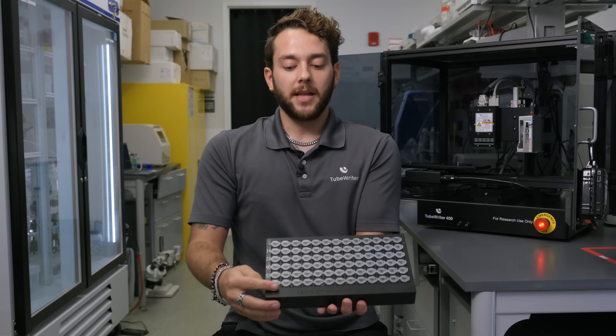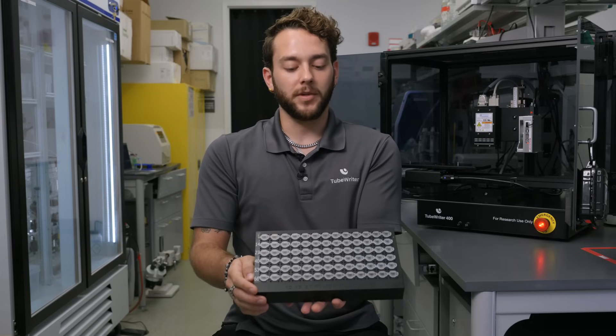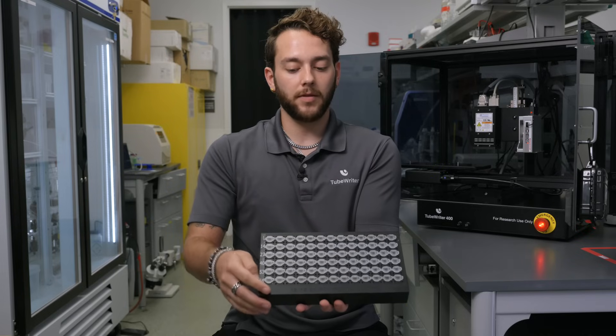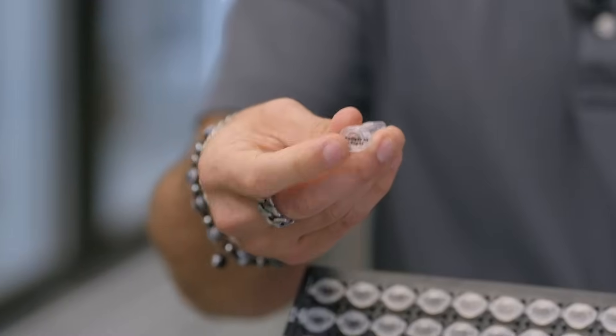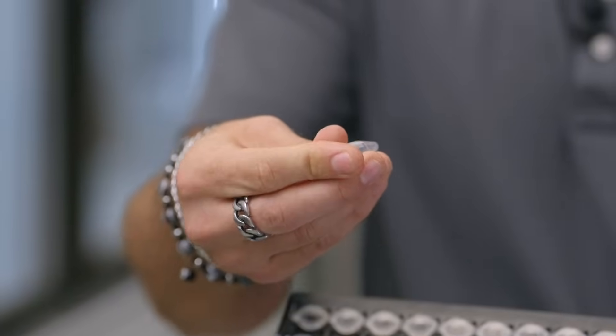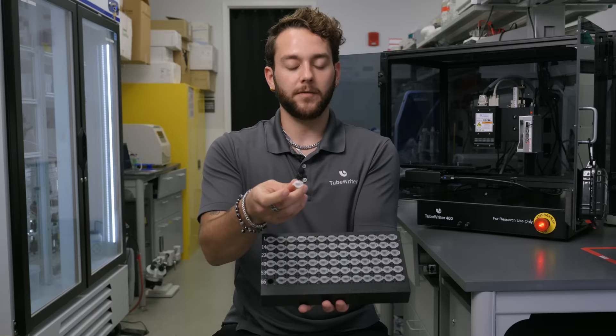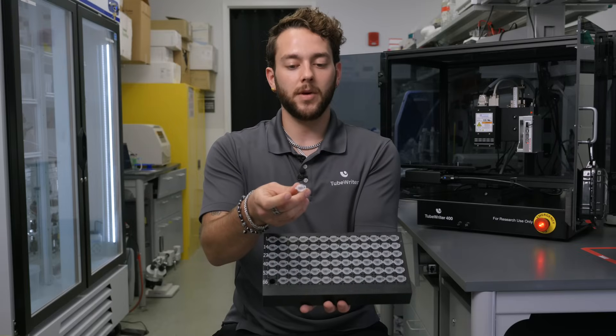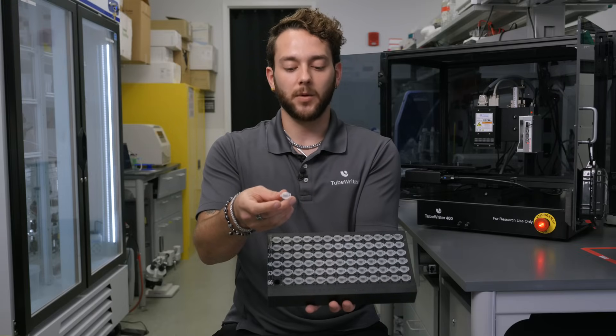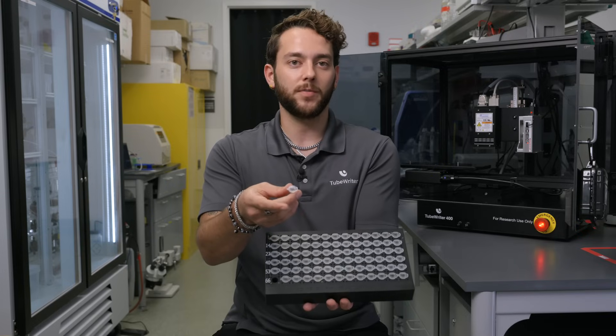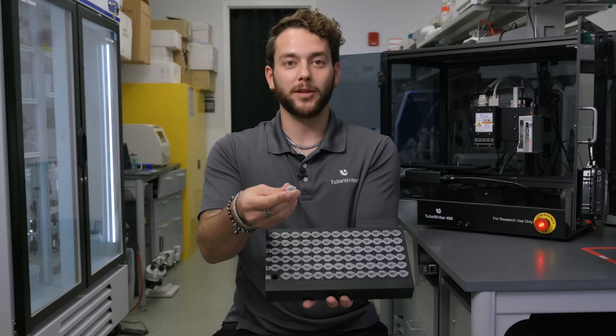You'll see that all of them have been printed nicely and you've got great print quality. I'll take one out and rub my finger across the print. You'll see that the text is fully cured onto the tube because that UV light baked it on just as well as it would if we were using standard mode. That's fast mode with the Tube Rider 400.